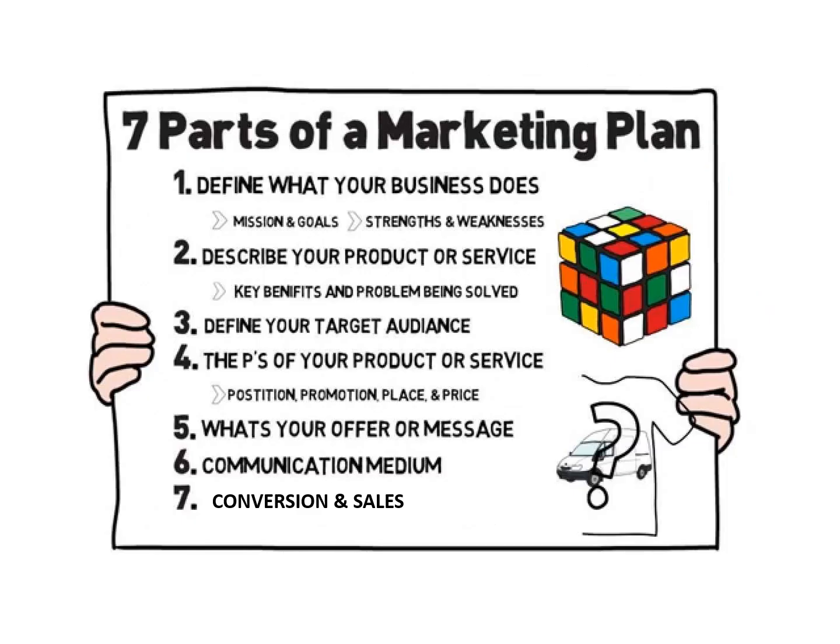There are seven parts in making a successful marketing plan. First, define what your business is and what it does — go into detail about what makes it unique from its competition, and define your mission, goals, and strengths and weaknesses by doing a SWOT analysis. Second, describe your product or services — what are the benefits and what problem does it solve for your customer?